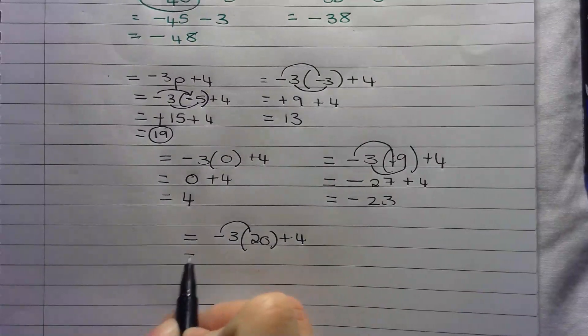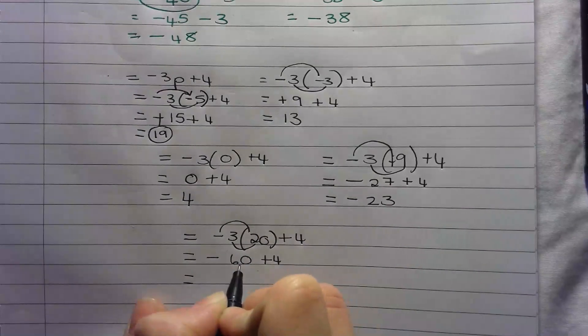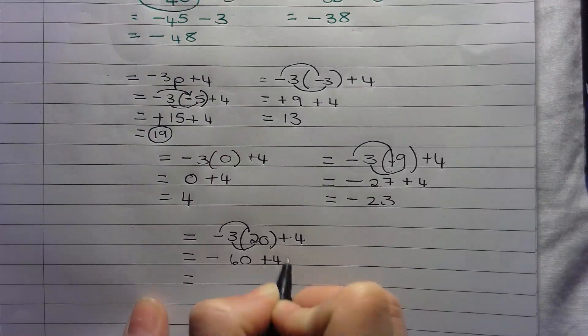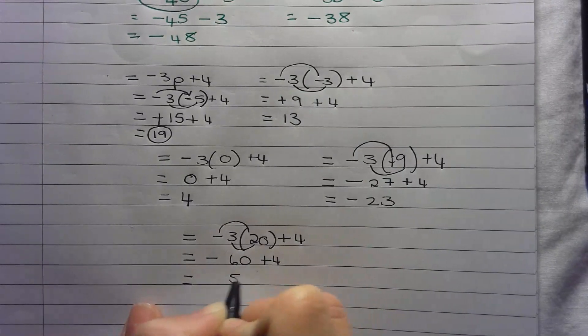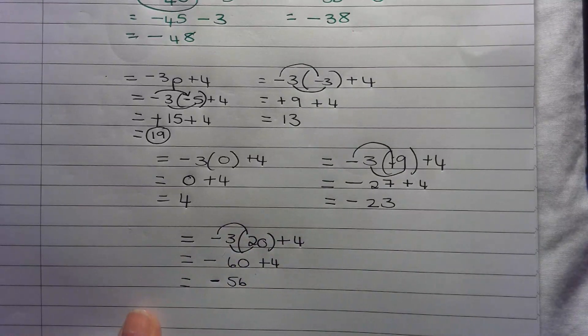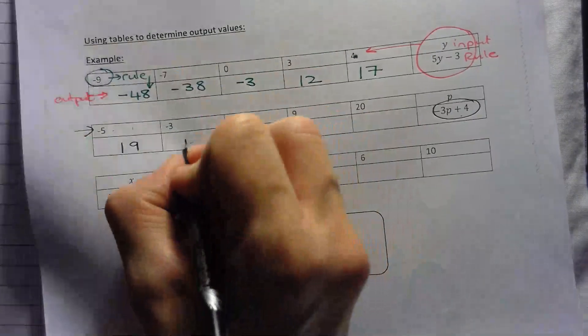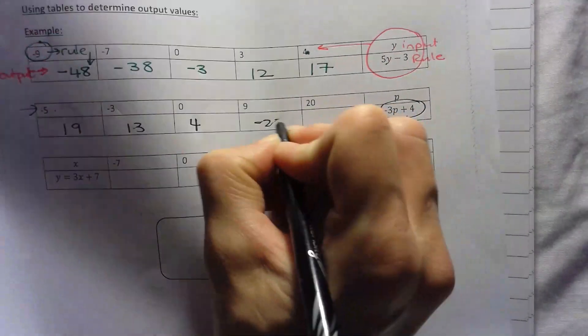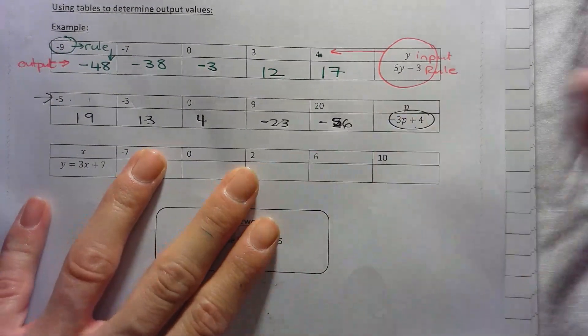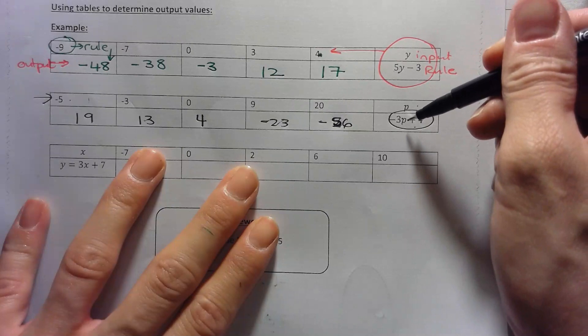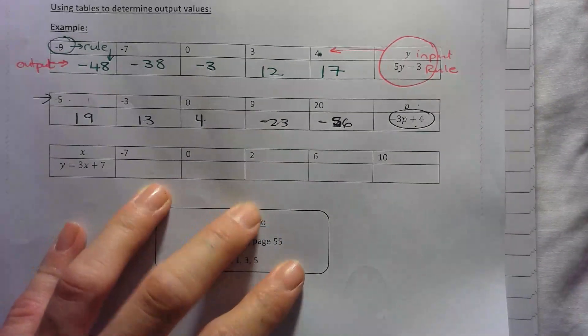So when you add on to a negative, you get less negative. Then again, negative times that's a positive is a negative. 3 times 20 is 60 plus a 4. So negative 60, you're adding on to it, you're getting even less. So you just subtract the two numbers in your head and then keep the sign of the bigger number. So 60 minus 4 is 56, but we keep the sign of the bigger number. And then that gets you the overall value. So in our table, we have 19, we have 13, 4, negative 23, and negative 56. So if I used p, it would be negative 3p plus 4. If I used x, it would be negative 3x plus 4. If I used pen, negative 3 pen plus 4. So you're just substituting in whatever you're given. And here you're given numbers.